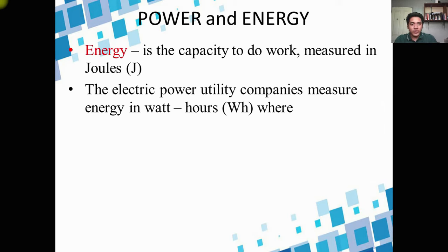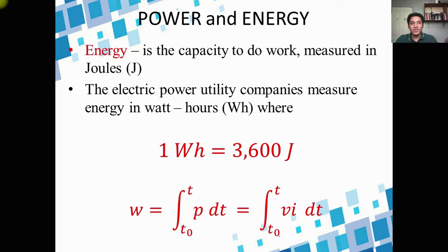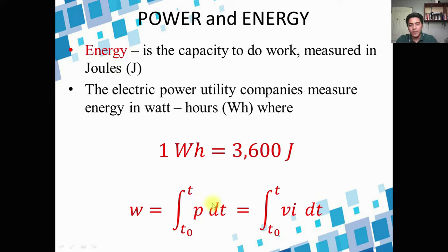Energy is the capacity to do work, measured in joules. Electric power utility companies measure energy in watt-hours, where 1 watt-hour = 3,600 joules. To find energy: W = ∫P·dt, which can also be written as W = ∫VI·dt.